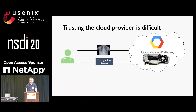GPUs are really good at doing things like image recognition. I'm going to use this running example of a doctor who has some private medical images of their patients, and they want to do image recognition on those images. In an ideal world, they'd be able to upload those images to a cloud provider like Google, run that recognition on a GPU, and get a result quickly.